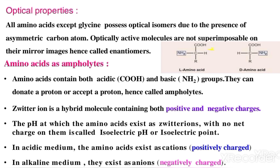Amino acids have both a positive and a negative charge. The molecule in which these two charges exist is called a zwitterion. The pH at which the amino acid exists as a zwitterion — with no net charge — is called the isoelectric pH or isoelectric point.